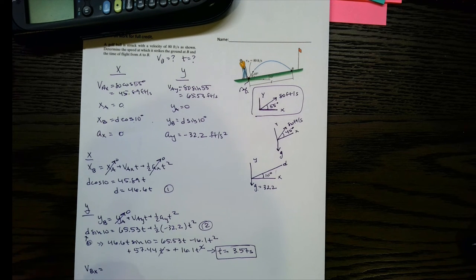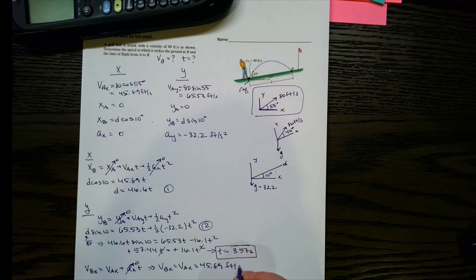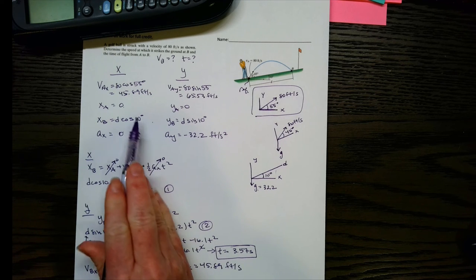So we've got vbx, and if you look at your equation, we could have vbx equals vax plus axt. This is zero though, right? So vbx equals vax, which is 45.89 feet per second from right there.